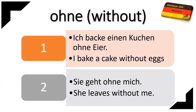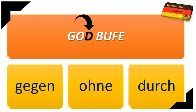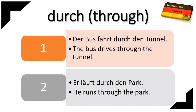The next preposition is O, which is ohne, and ohne means 'without.' For example: 'Sie geht ohne mich' — She leaves without me. In place of 'without,' we use ohne, which is an accusative preposition.